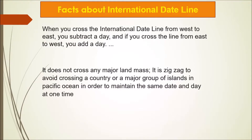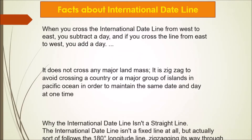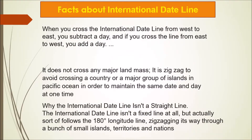The international date line does not cross any major landmass. It is zigzag in shape to avoid crossing a country or a major group of islands in the Pacific Ocean, in order to maintain the same date and day at one time.